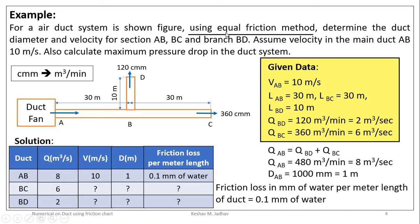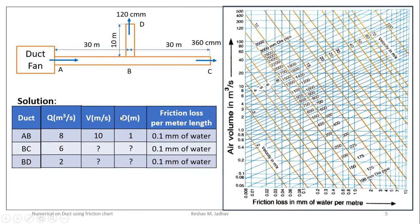Since we are using the equal friction method, we consider this friction loss per meter length constant for each section of the duct. Therefore, friction loss per meter length for sections BC and BD is also 0.1 mm of water column. Using the friction chart, we draw a vertical line at 0.1 on the x-axis. For duct section BC, volume flow rate is 6 cubic meters per second, so we draw a horizontal line from 6 on the y-axis to find the intersection point.